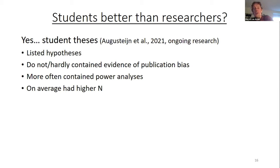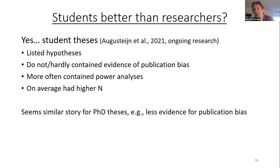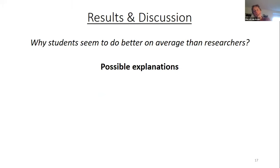If we look at what criteria were violated most, it was 'single' — many hypotheses combined a lot of things — and 'understandable' — sometimes we couldn't figure out what was actually meant. We also asked ourselves whether students do better than researchers. My answer is yes. Students list hypotheses, there is hardly any evidence of publication bias in student theses, they often do power analyses, and on average they also have higher sample sizes.